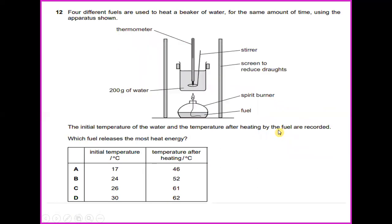Four different fuels are used to heat a beaker of water for the same amount of time. The initial temperature of the water and the temperature after heating by the fuel are recorded. Which fuel releases the most heat energy? For this question, the answer would be C, 26 and 61.